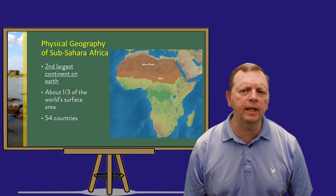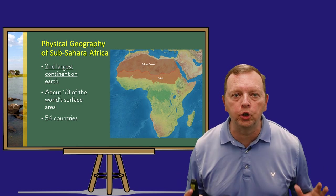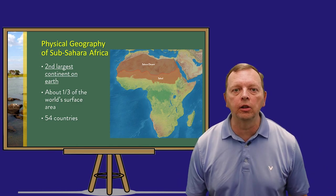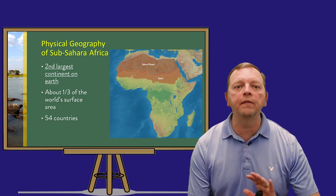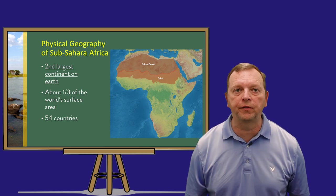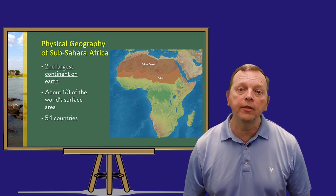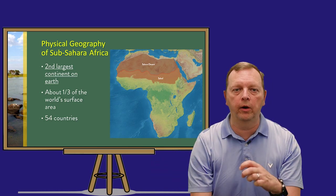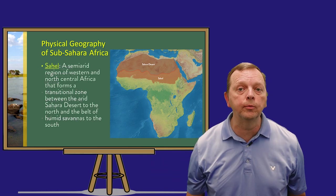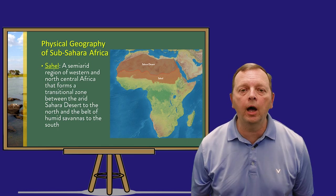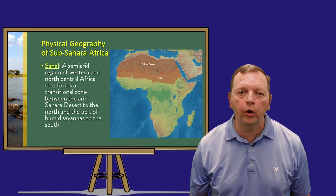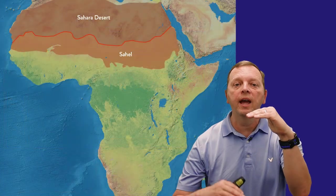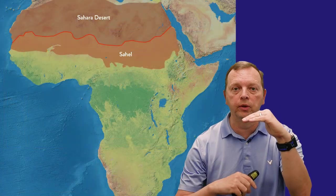Now, we need to realize that Africa is a huge, huge continent. After Asia, it is the largest continent in the world, covering over one-third of the world's surface area. The term sub-Saharan Africa means below the Sahara Desert, and the region we first come to is the Sahel. The Sahel is a semi-arid transitional zone between the Sahara Desert to the north and the Savannas to the south.